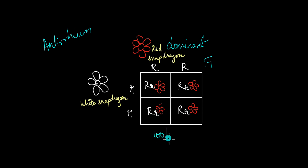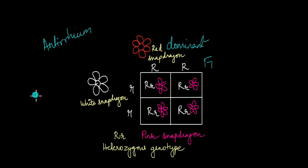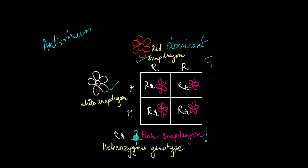But what he observed was very different. When this scientist was performing his experiments with snapdragon, instead of red flowers, the F1 generation showed a completely different third phenotype — pink flowers. How did we get pink here? The mother plant is red and the father plant is white. Where did this pink come from?